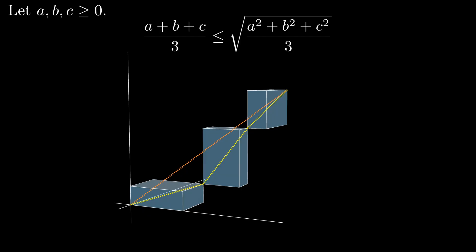Again, the left side is the arithmetic mean of a, b, and c, while the right side is the quadratic mean, or the root mean square, of a, b, and c. So this visual demonstrates the AM-QM inequality for three variables.